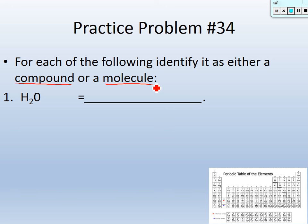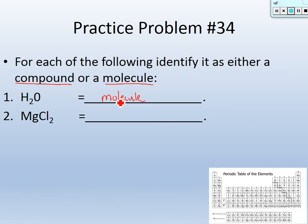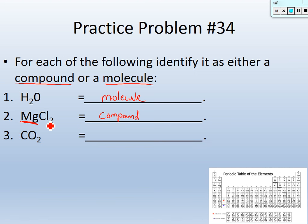Practice problem 34: H₂O — hydrogen and oxygen. Is it a compound or a molecule? It's a molecule, because hydrogen is a nonmetal and oxygen is a nonmetal — no metal present, held together by covalent bonds. Number two: magnesium chloride — that's a compound, because magnesium is a metal and chlorine is a nonmetal. Number three: CO₂, carbon dioxide — it's a molecule. Carbon is a nonmetal and oxygen is a nonmetal.